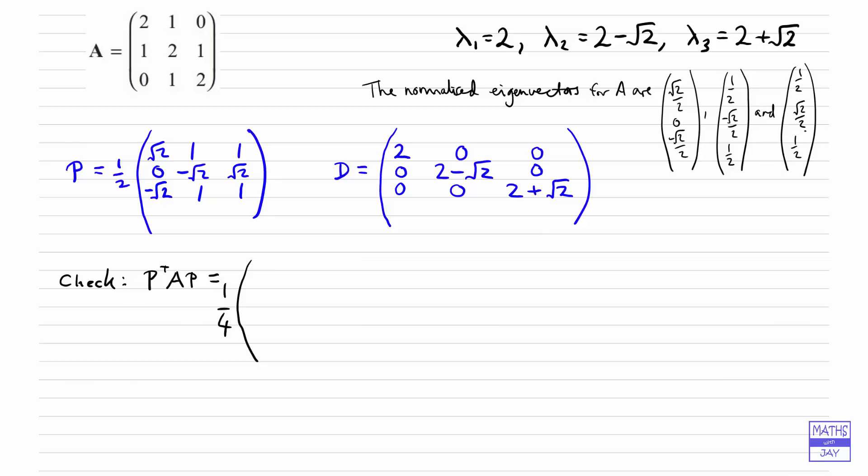And then P to the T, that's the transpose. So we're just swapping around rows and columns. So we would get root 2, 0, minus root 2 for the first row, 1, minus root 2, 1 for the second row. And then we would write down the matrix A. So that would be 2, 1, 0, 1, 2, 1, 0, 1, 2.